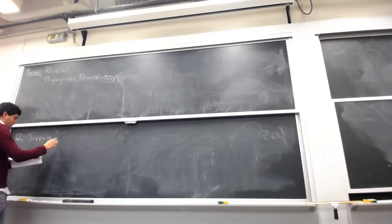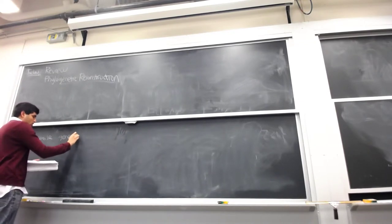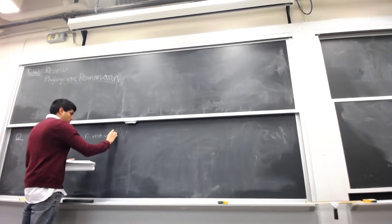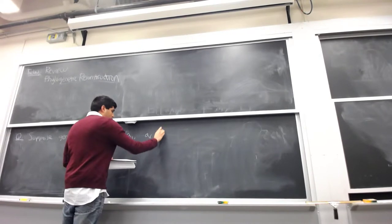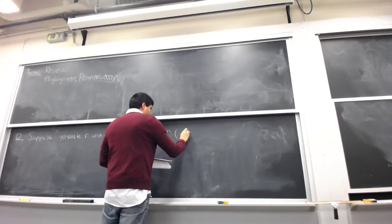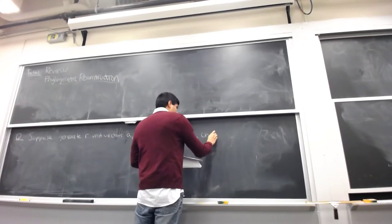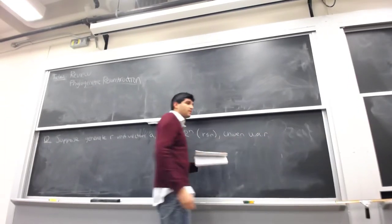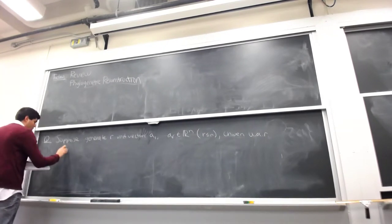Let's consider the following type of experiment. Suppose we generate R unit vectors A_1 up to A_R in N dimensions, where R is at most N. And these are chosen uniformly at random. Let's say they're chosen randomly on the sphere for simplicity.